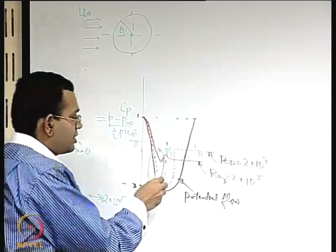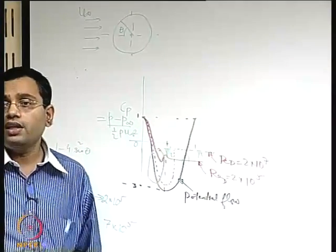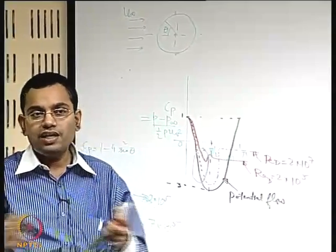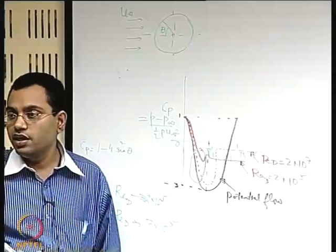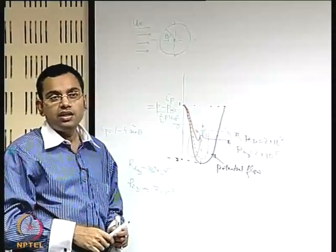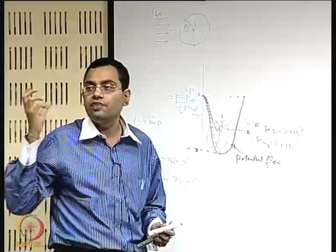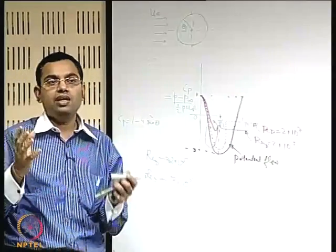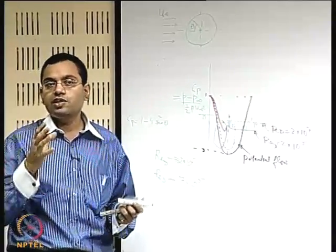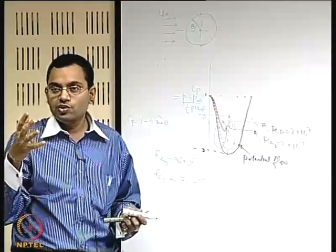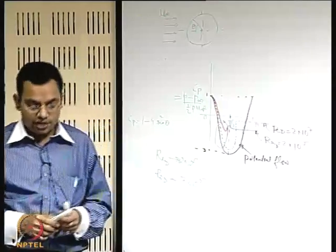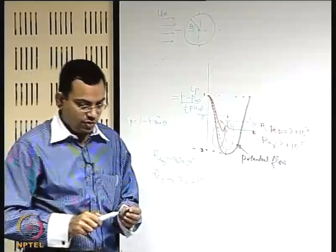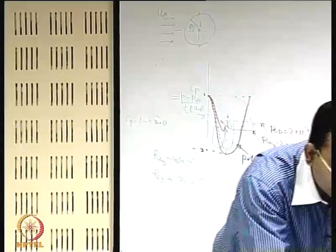If one side of the cylinder has a laminar boundary layer and the other a turbulent boundary layer, the difference in separation points creates asymmetric pressure distribution — generating a lateral force. This principle applies equally to spheres: a sphere with laminar flow on one side and turbulent on the other experiences a lateral force, causing it to swing. This connects directly to the fluid mechanics of sports balls.